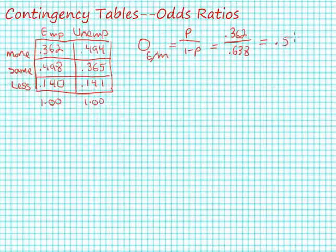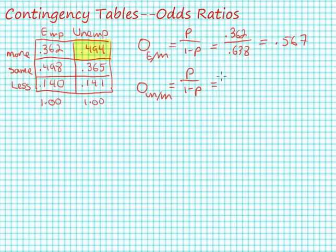Let's calculate our odds for people who are unemployed and think that unemployment benefits by the government should be increased. Again, we'll have some probability divided by one minus that probability. The probability of interest here is 0.494 divided by 0.506.